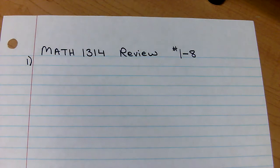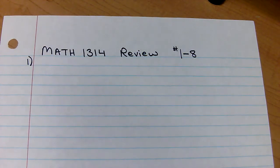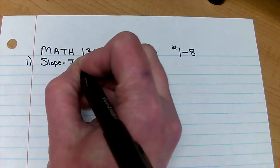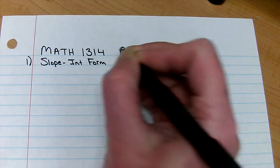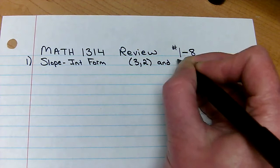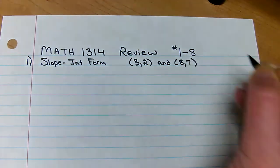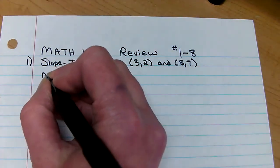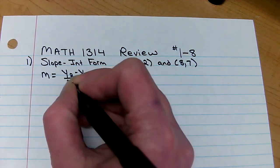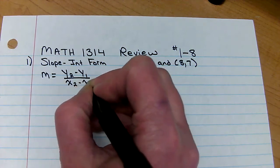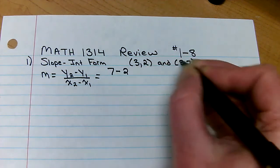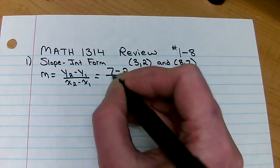On number one, it says write an equation in slope-intercept form for a line that passes through three, two, and eight, seven. So the first thing we need is we need the slope. So slope is the change in y's over the change in x's. So that would be seven minus two over eight minus three.